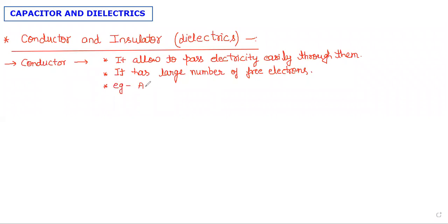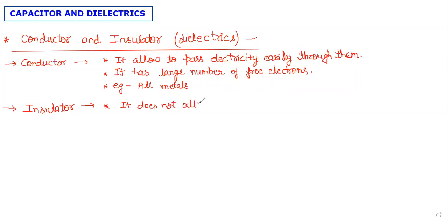All metals are conductors. Ab aate hain insulator par. Insulator ki baat karein to iska bilkul opposite hoga — it does not allow electricity to pass. It does not have free electrons.